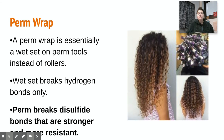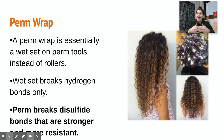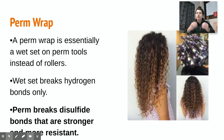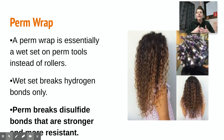So a perm wrap is essentially a wet set on perm tools instead of rollers. In a wet set, we only break hydrogen bonds, because hydrogen bonds can be broken with water. In a perm, we are breaking the disulfide bonds, which are stronger and more resistant. Disulfide bonds are the strongest of the three bonds within the hair, and applying a perm chemical breaks the disulfide bond to alter the wave pattern.